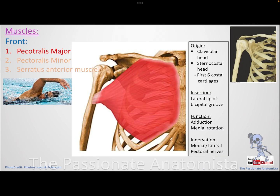The first muscle in the pectoral region is the pectoralis major. Pectoralis means it lies in the pectus — pectus means chest in Latin. It's called major because we have a minor below it. It has a clavicular head, which comes from the medial third of the clavicle, and a sternal head, which comes from the sternum and the first six costal cartilages.